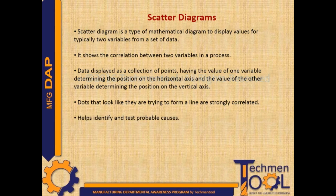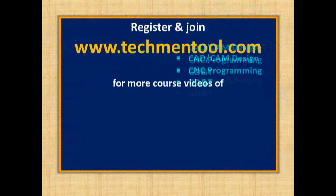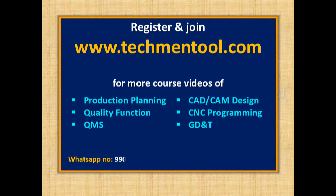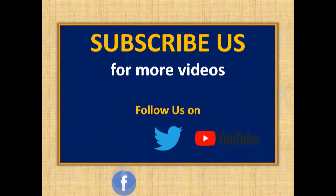Dots that look like they are trying to form a line are strongly correlated. Scatter diagrams help identify and test probable causes. This is the sample construction of a scatter diagram.